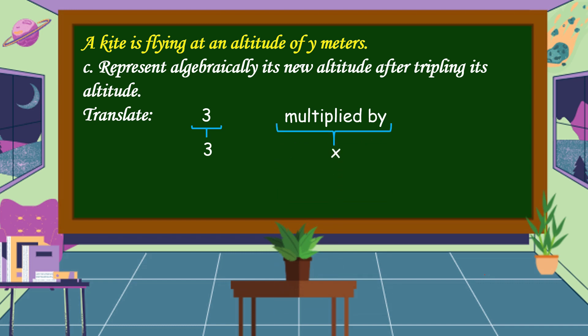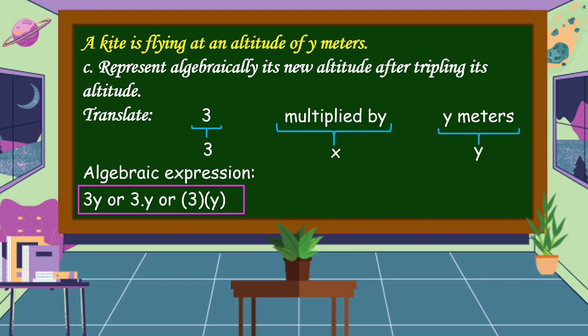Let's make an algebraic expression. We can use 3y, or 3 times y, or 3 open close parentheses times y open close parentheses. This means that the kite's new altitude is the product of 3 and y meters.